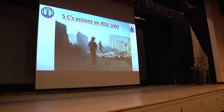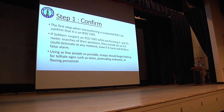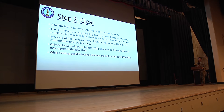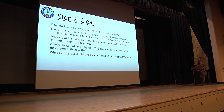Five C's: actions on IED and UXO. Step one — Confirm. The first step when encountering a suspected IED is to confirm that it's an IED or UXO. Once you're performing a 5 to 25, treat it as if it could detonate at any moment, even if it turns out to be a false one. Step two — Clear. If an IED is confirmed, the next step is to clear the area. Safe distance is determined by several factors: tactical situation, avoidance of predictability, and movement several hundred meters away.